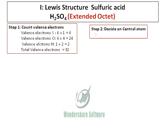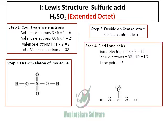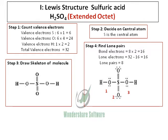Once you decide on sulfur as the central atom, let's draw the skeleton of the molecule. This has two skeletons, but let's focus on one of them — the skeleton in which sulfur has a double-bonded oxygen. If you look carefully at that structure, the valency of sulfur is 12, meaning it has 12 electrons surrounding it. When you calculate the lone pairs, you will find four lone pairs on each sulfur. This is Lewis Structure 1.